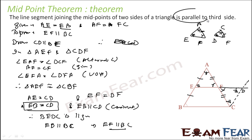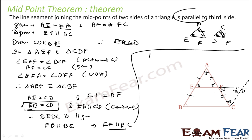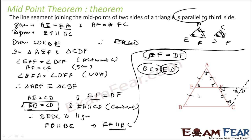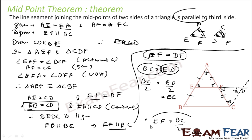Also, we can prove EF equals BC/2. We know EF equals DF, and BC equals ED (opposite sides of the parallelogram). So BC/2 equals ED/2, and ED/2 equals EF. Therefore EF equals BC/2, which we can easily prove once we establish BEDC is a parallelogram.